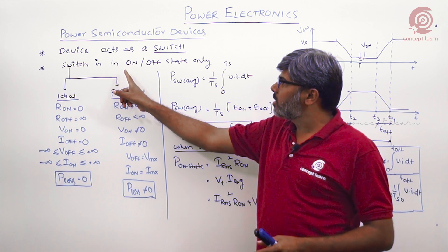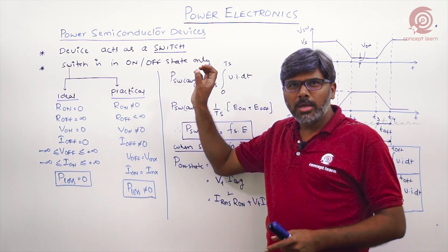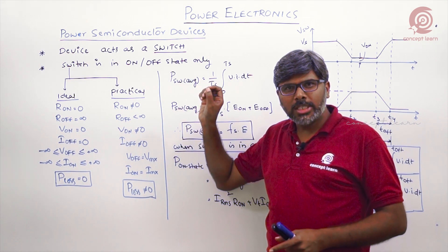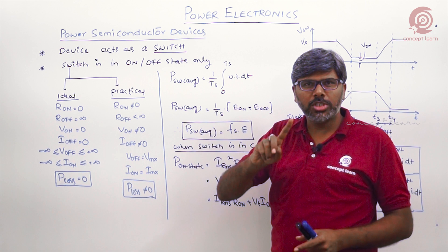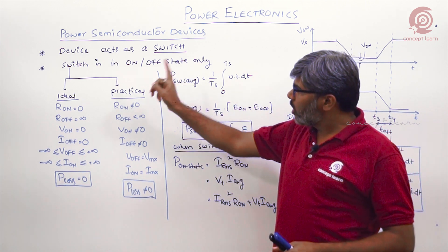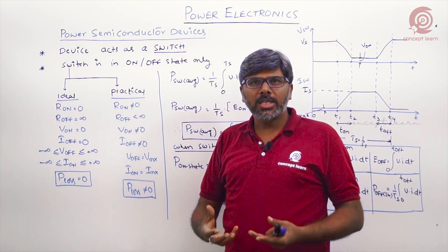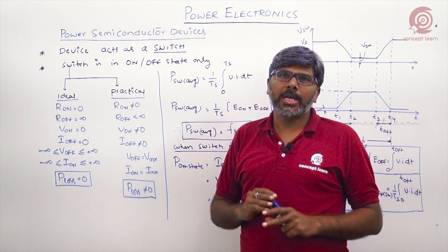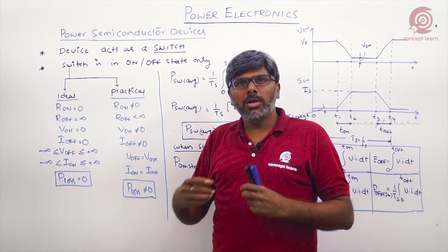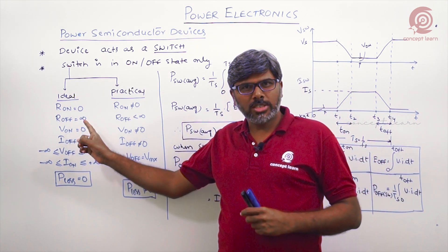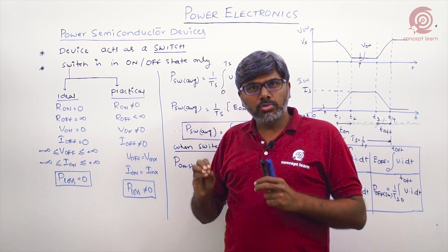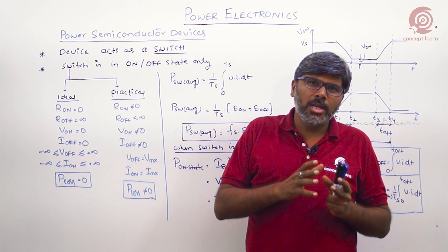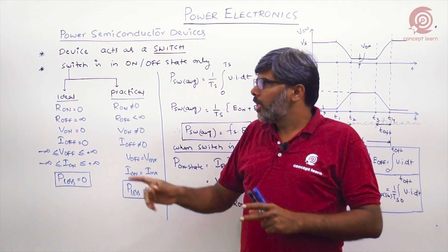A switch has only an on state and an off state. In power electronic converters, the device acts as a switch operating in only these two states. We consider two cases: ideal and practical. In the real world there is no ideal switch, but we study the ideal case to analyze circuit behavior in a simpler way.